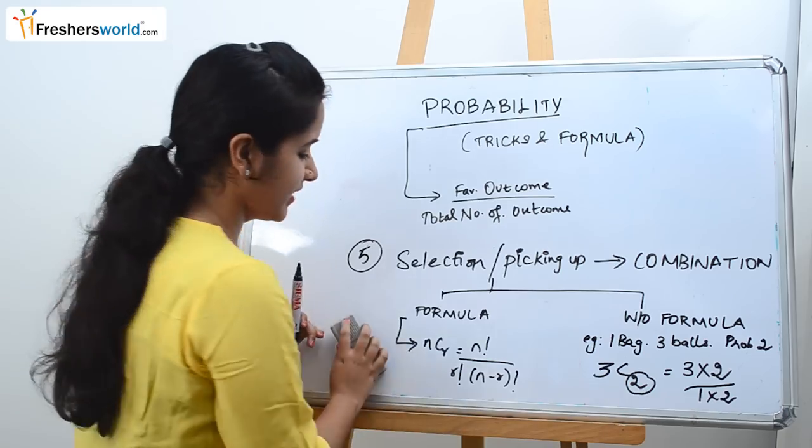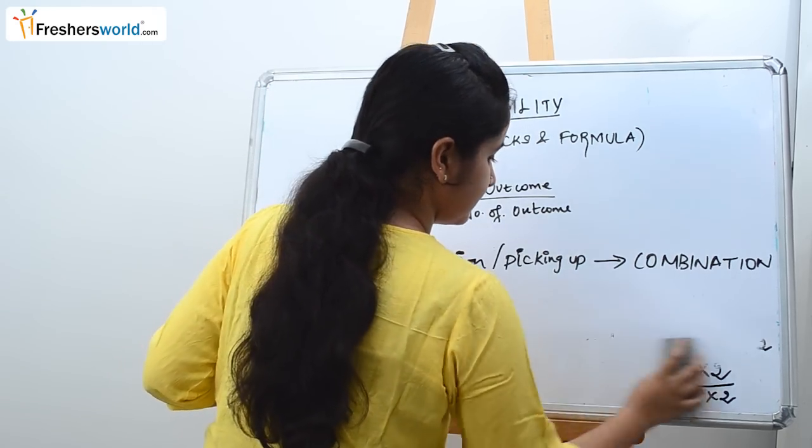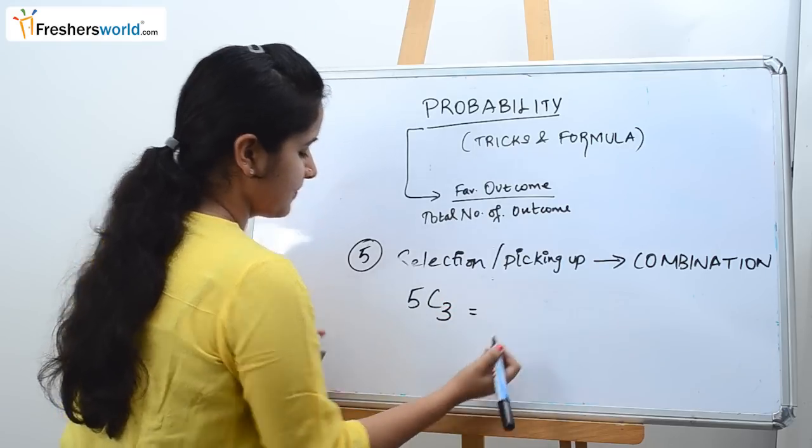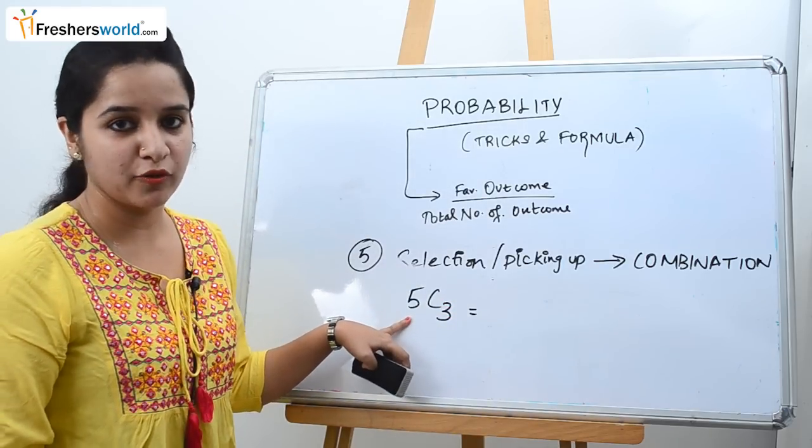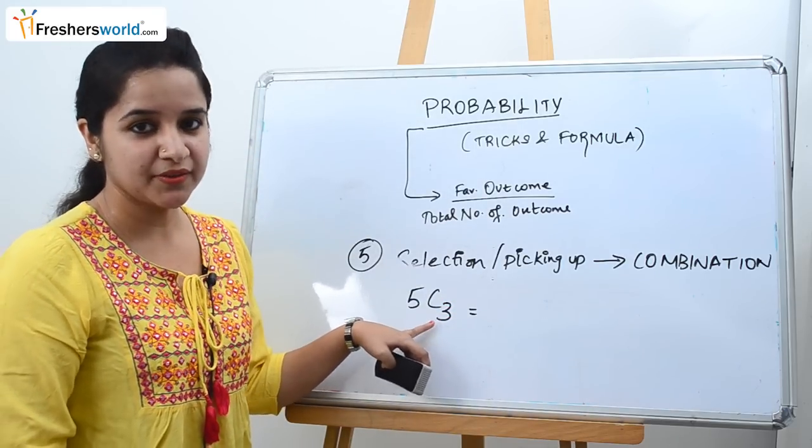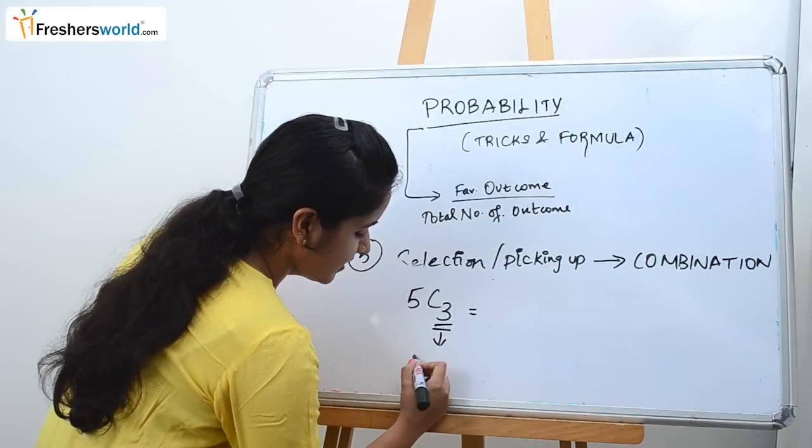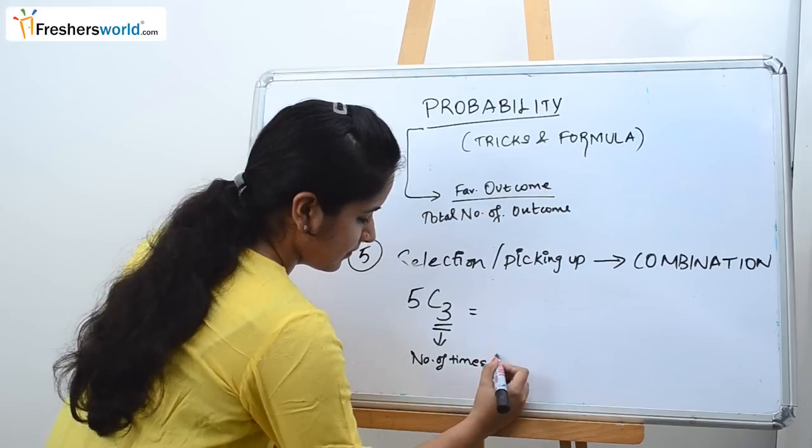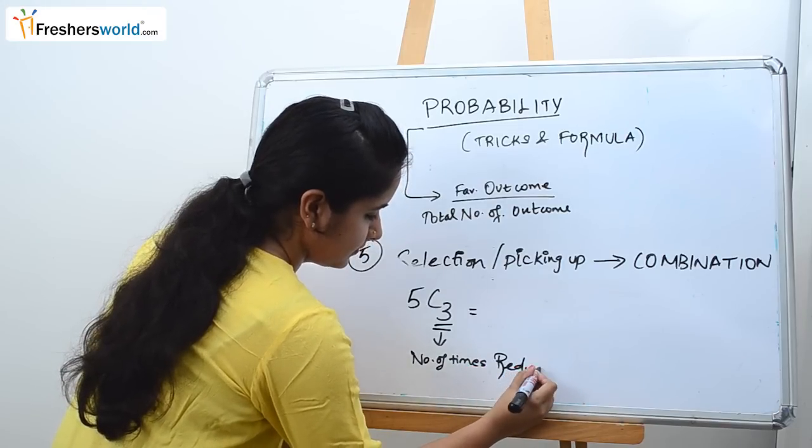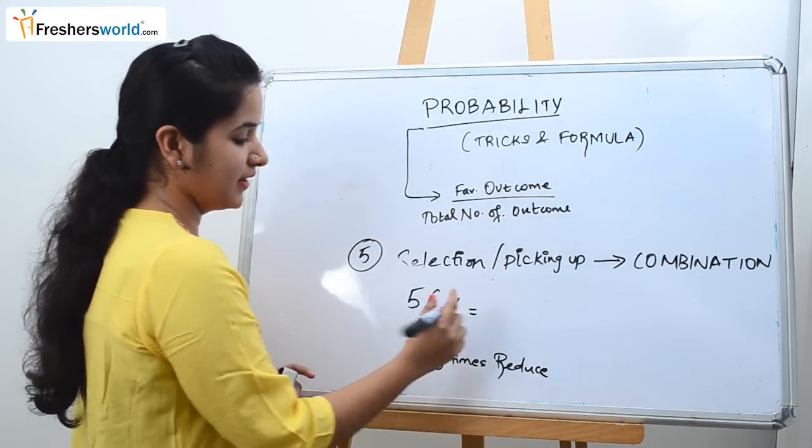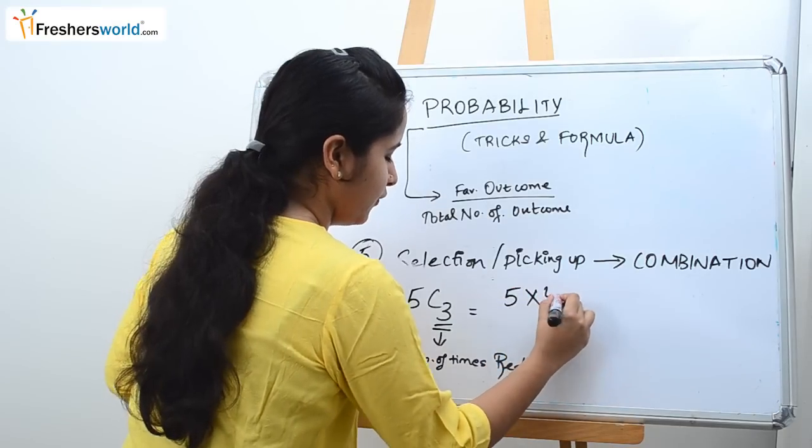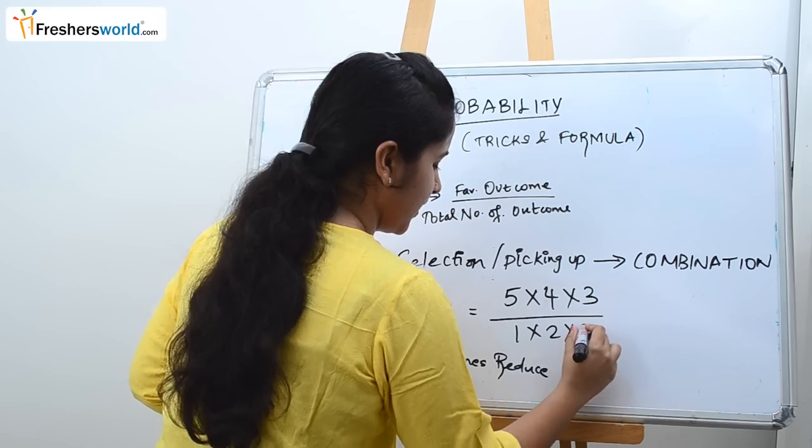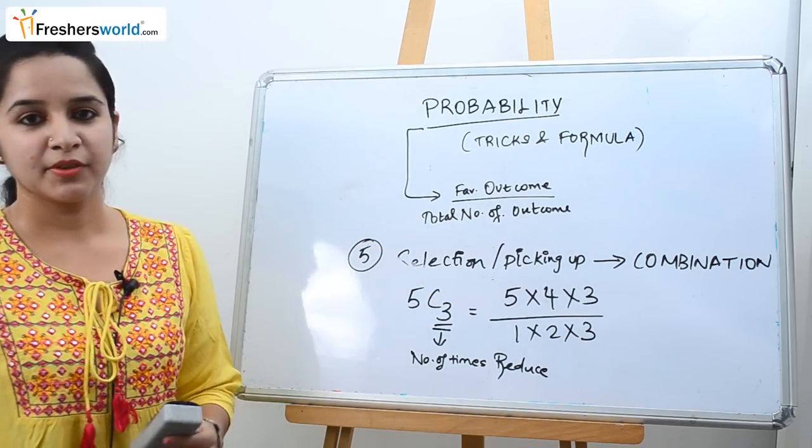Let's take another example. Let's say 5C3. So here is the total number of balls out of which you need to take three balls. So how many times? Always remember number of times we reduce. So 5 and 3. So 5 into 4 into 3 divided by 1 into 2 into 3. Simple right?